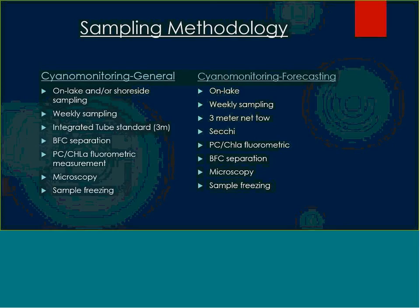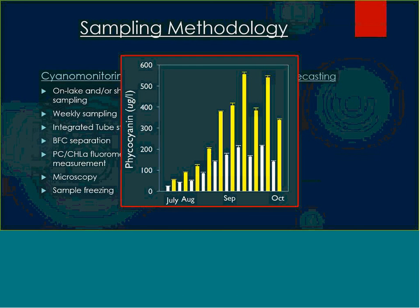Some folks have had questions about why we freeze our samples — that's an important component of our sampling methodology. Samples can be collected at all different times of day under all different types of weather conditions, and that's going to potentially change the cyanobacteria fluorescence within the water body. By freezing, it kind of normalizes that component — it takes the weather component out of it. It also helps to lyse the cells and get rid of some of the detritus within the sample.